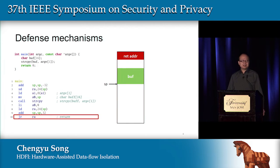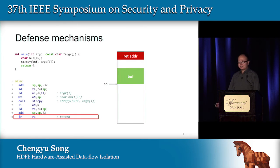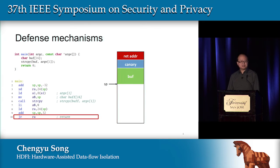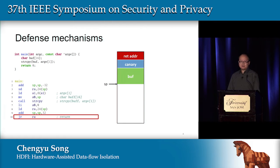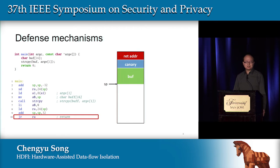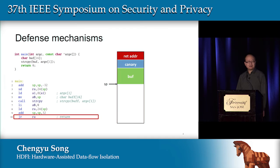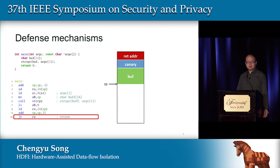There are many defense mechanisms proposed to defend against this kind of attack. For example, the most widely used one is called StackGuard or Stack Cookie, which inserts a canary value between the buffer and the return address. If an overflow happens, this canary will be corrupted and the attack will be detected. Unfortunately, if attackers can directly write to any given address, or if there is an information leak vulnerability, this defense mechanism can be easily bypassed.